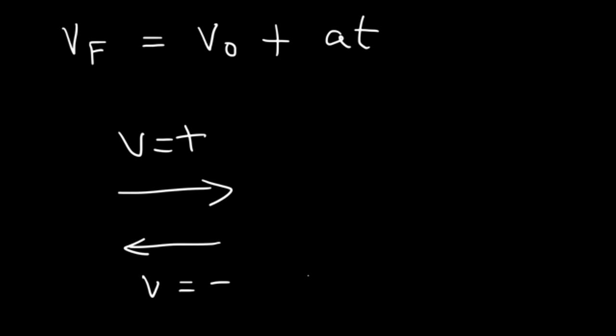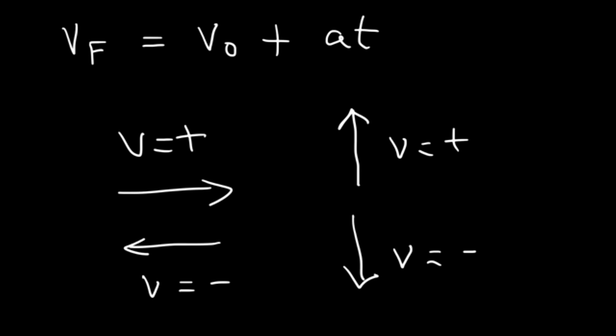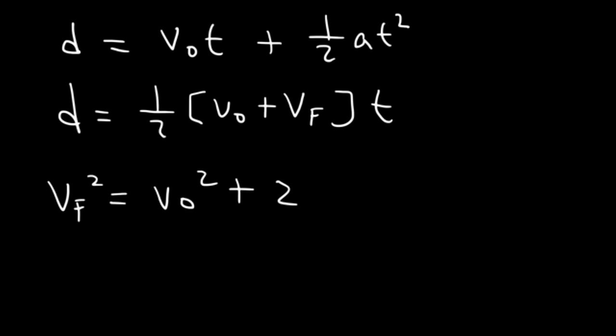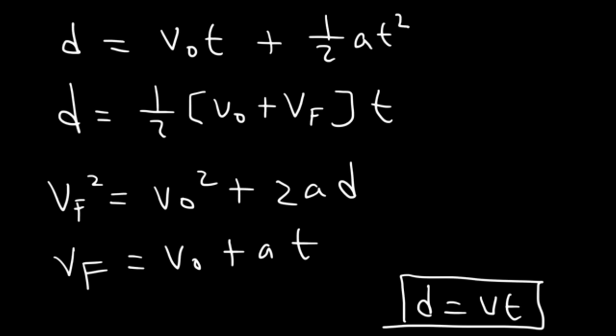For an object moving to the right, velocity is positive; moving to the left, velocity is negative. In free-fall situations, we deal with motion in the y direction - when an object goes up, velocity is positive; when it goes down, velocity is negative. The next formulas are: d equals v-initial times t plus one-half at squared; d equals one-half times (v-initial plus v-final) times t; and v-final squared equals v-initial squared plus 2ad.